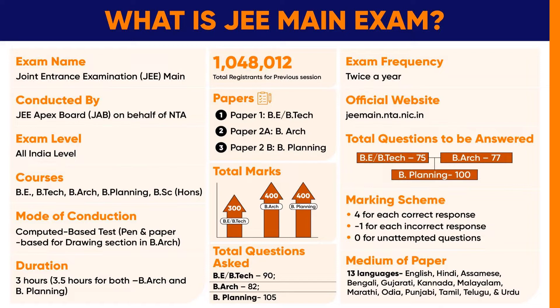JEE Main is conducted separately in three papers: Paper 1 for B.E. or B.Tech, Paper 2A for B.Architecture, and Paper 2B for B.Planning. The exam is conducted online as a computer-based examination. The duration of the exam is three hours for B.E. or B.Tech, and 3.5 hours for B.Architecture or B.Planning.